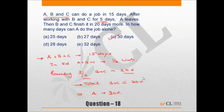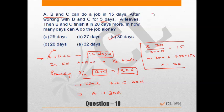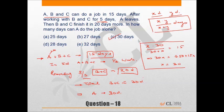Alternatively, using the formula: if A takes x days and B+C take 30 days, then x × 30 / (x + 30) = 15, giving 30x = 450 + 15x, so x = 30 days. The formula for two people completing a job: if one takes x days and another y days, together they take xy/(x + y) days.